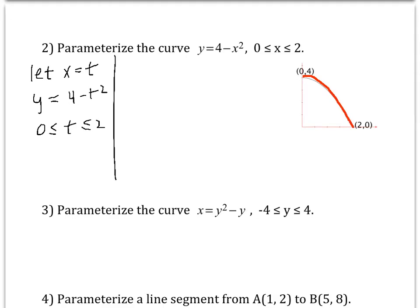But see, there's other ways to parametrize the same curve. Suppose I let x equal 2 minus t, and let y equal 4 minus 2 minus t squared, for 0 is less than or equal to t less than or equal to 2. Can you see what that would look like? Notice in this case, at t equals 0, you start off at the point 2, 0. And as t gets closer to 2, you're actually moving up the parabola. At t equal 2, you end up at 0, 4.